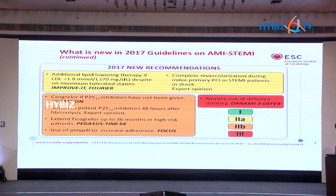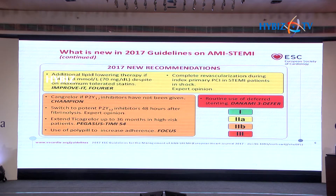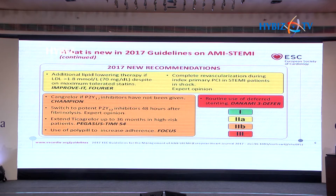Extended ticagrelor up to 36 months in high-risk patients (PEGASUS 54) is a Class IIB indication. Use of a polypill to increase adherence (FOCUS trial) is also Class IIB. Routine use of deferred stenting is Class III, based on the DYNAMI 3 deferred stenting trial.